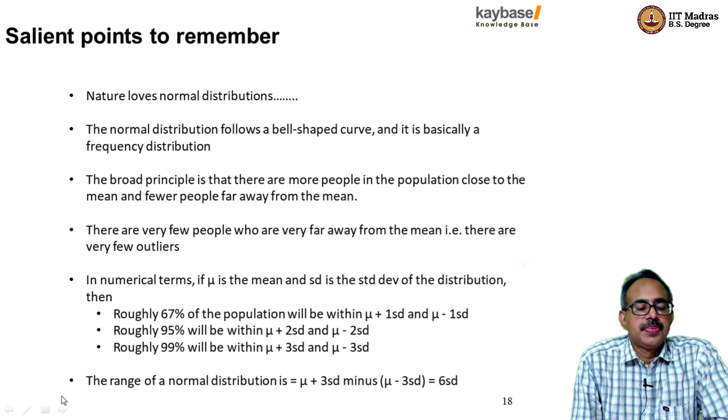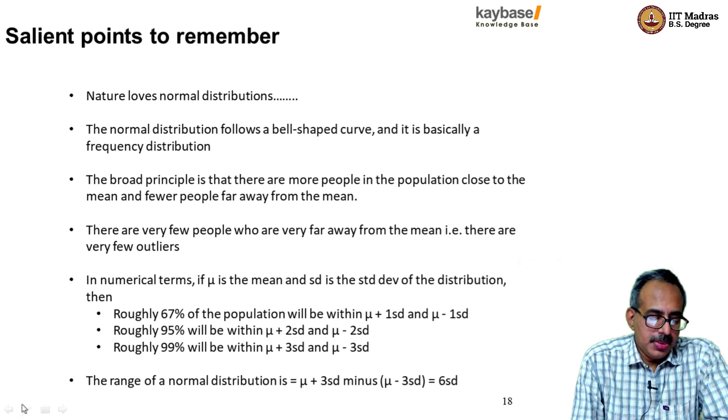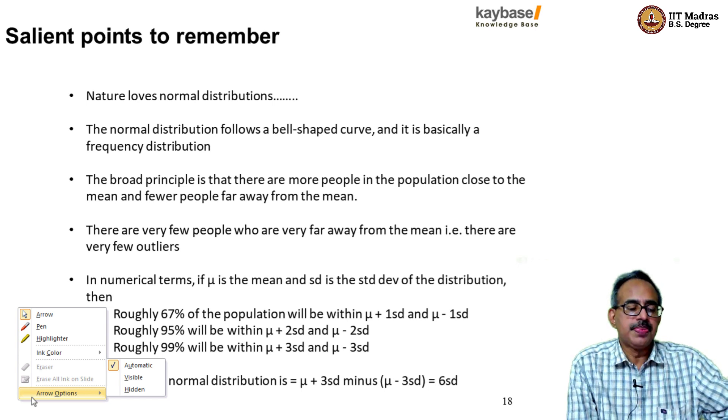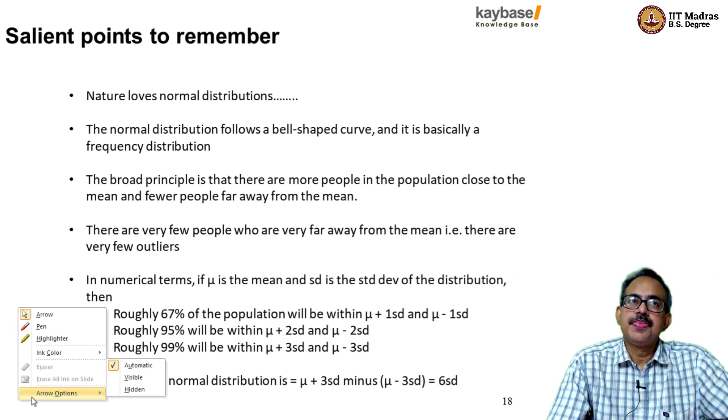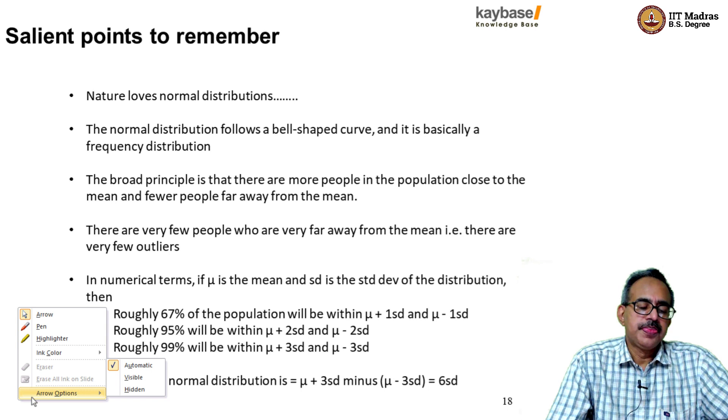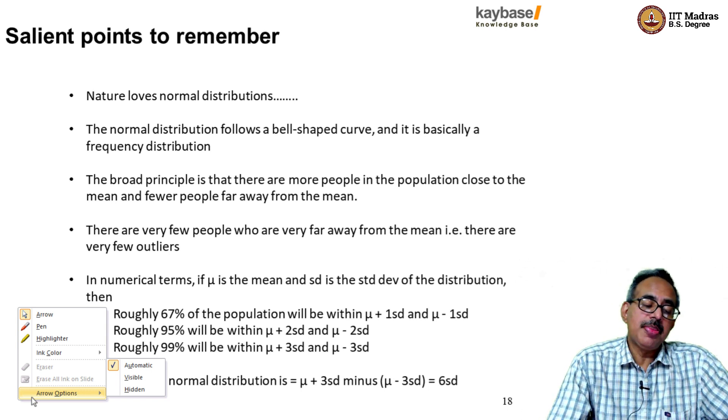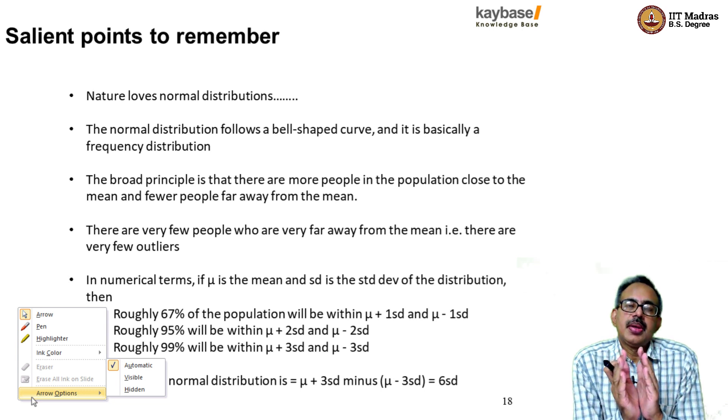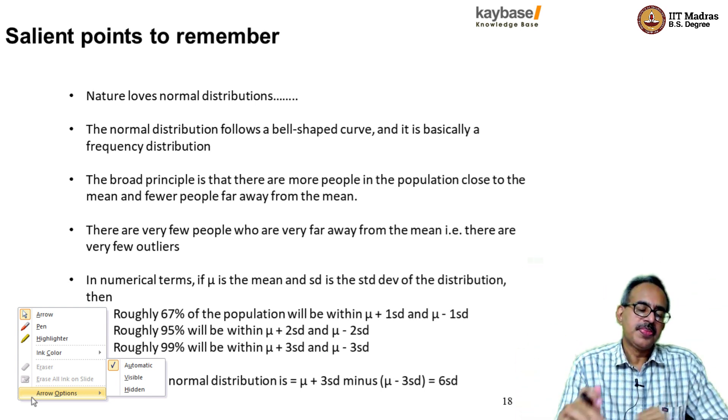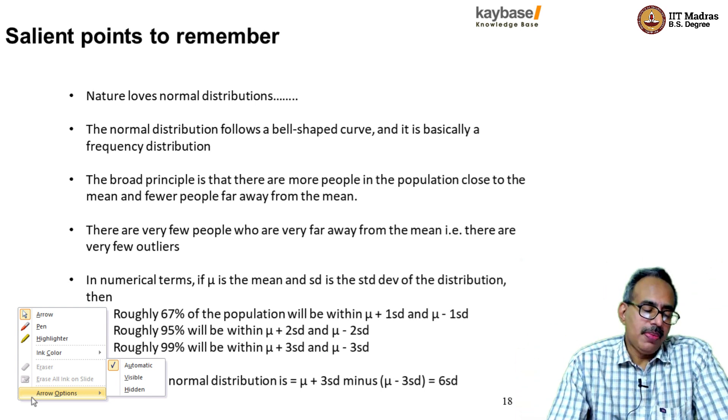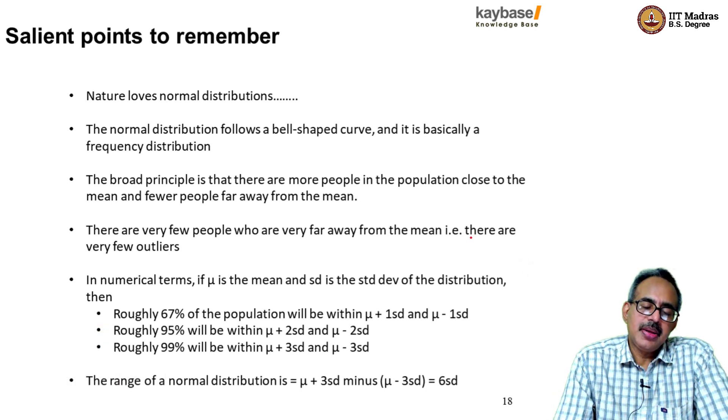So to sum up, salient points to remember about the normal distribution is that nature loves normal distributions. That's point number one. The normal distribution follows a bell-shaped curve, and it's basically a frequency distribution as we saw earlier. The broad principle is that there are more people in the population closer to the mean and fewer people away from the mean, which is why the curve is the bell-shaped curve. There are very few people who are very far away from the mean. So there are very few outliers as we saw.